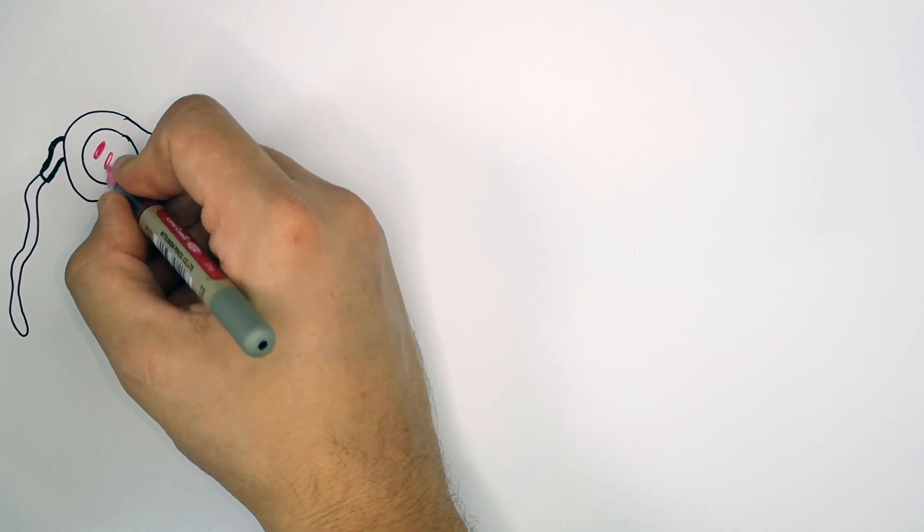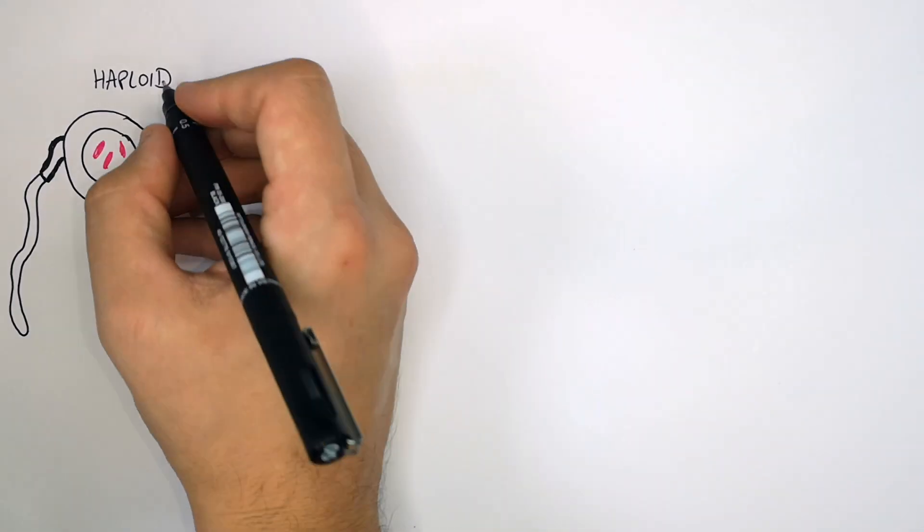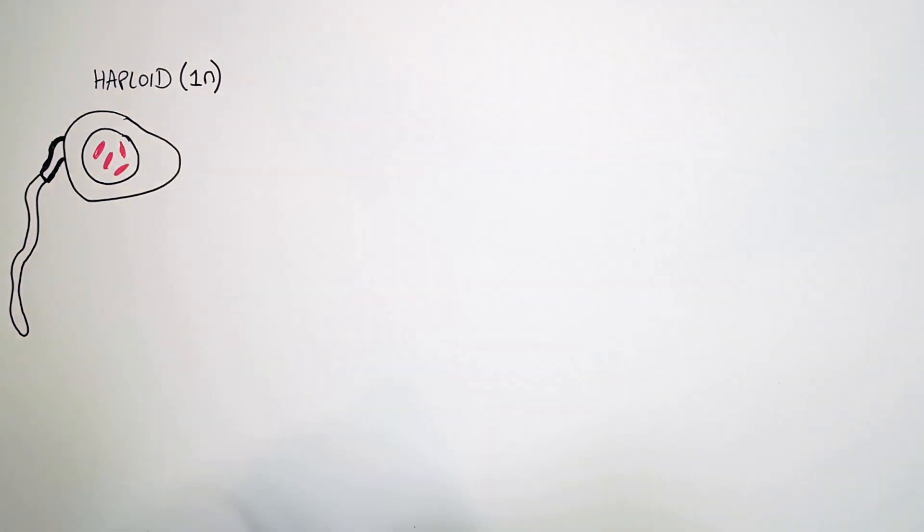This here is a sperm. Sperms have got one set of chromosomes, so they are haploid. They've got 1n chromosomes, one set.